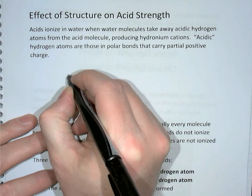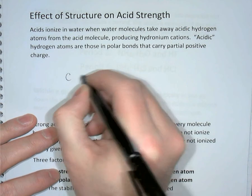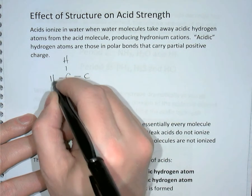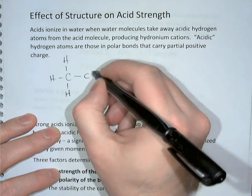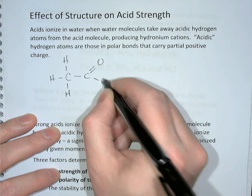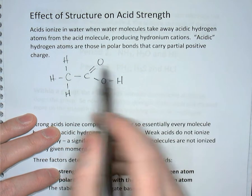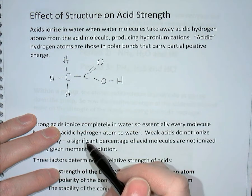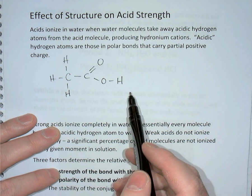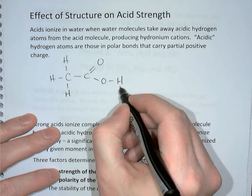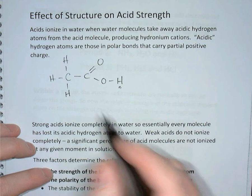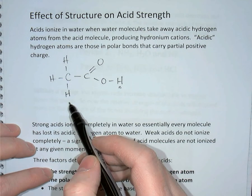For example, if you take an acetic acid molecule — two carbons, one of them has three hydrogens attached, the other carbon has a double bond oxygen and then OH. This is the carboxylic acid group from organic chemistry. Within this molecule, there are four hydrogen atoms, but only the hydrogen atom bonded to oxygen is considered acidic. These three hydrogens on the carbon are not acidic.